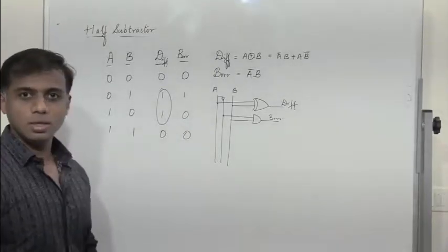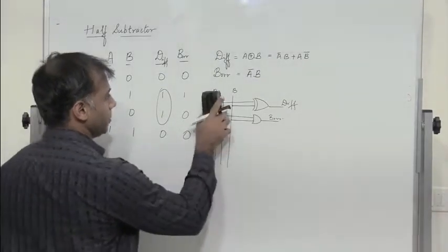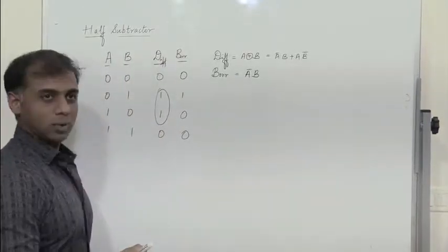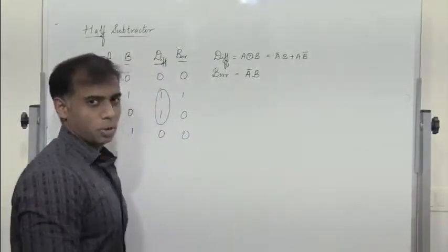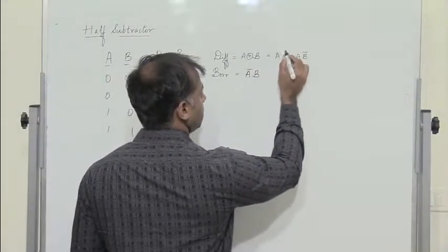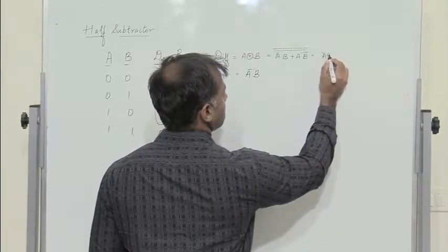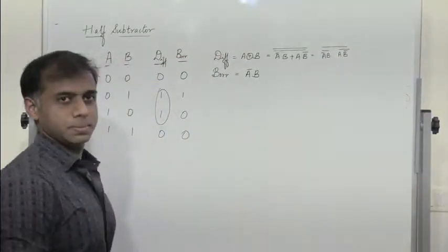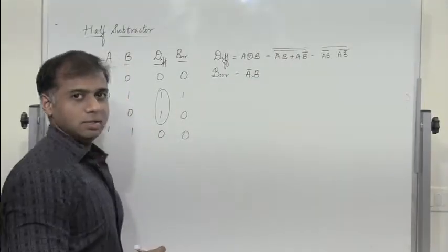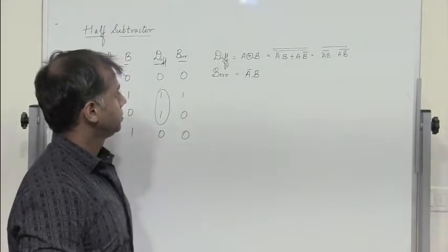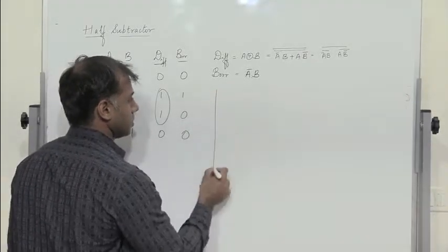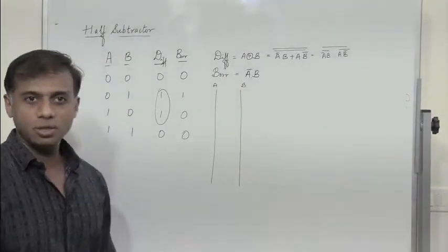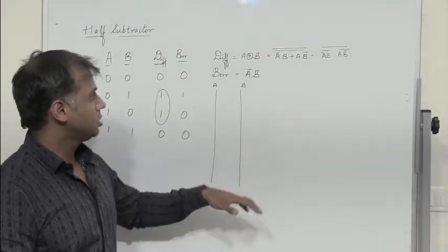The same thing can be implemented using NAND gates and NOT gates. For NAND gate implementation, we need to convert all sum-of-products terms. So we double complement the expression and get A̅B̅ · AB̅ all complemented, with no plus sign, so we retain borrow as it is. We draw two parallel lines for A and B, referencing the previous videos on NAND and NOR gate implementations.